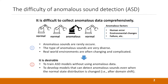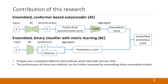Anomalous sound detection is a task of identifying whether the sound emitted from a target machine is normal or anomalous. It is very difficult to collect anomalous data comprehensively because these sounds rarely occur, and the possible types of anomalous sounds are very diverse. In addition, real-world environments are often changing. Therefore, it is desirable to train ASD models without using anomalous data and to develop models that can detect anomalous sounds even when the normal state distribution has changed.